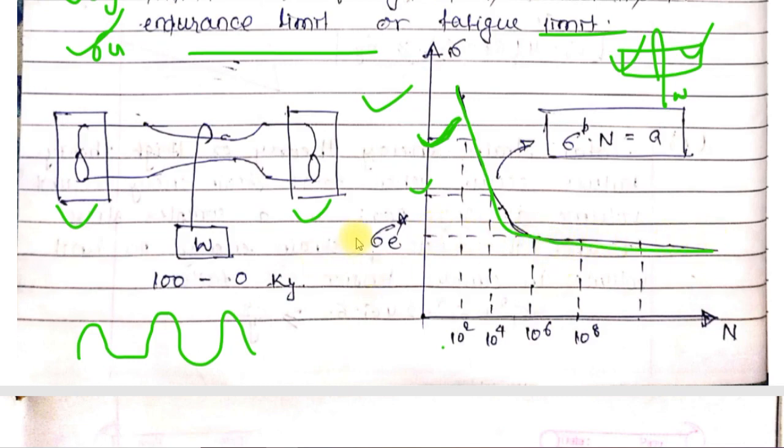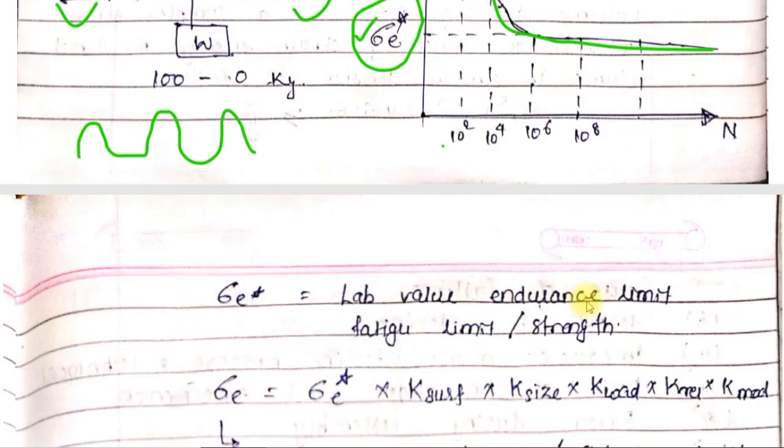Then after a certain number of cycles, the strength reaches a limiting value where it will not decrease further. This limiting value is called the theoretical endurance limit or lab limit.